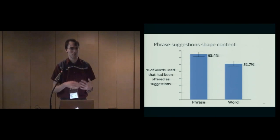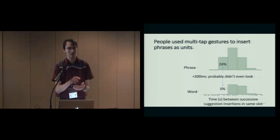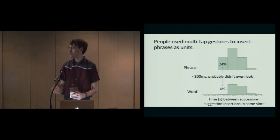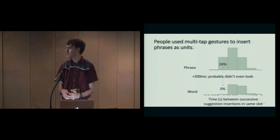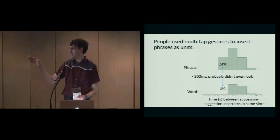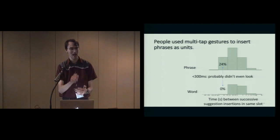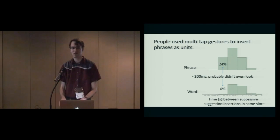Our other question was about timing and process. A critical measure that we looked at was the time between successive acceptances, which would tell us: are people accepting phrases as units, or are they going tap-look-tap-look? Here we plot a histogram of the time between successive acceptances in the same slot on log scale. We see there's an entire bin, that leftmost bin, which is 300 milliseconds or less, in which 24 percent of the successive taps in the phrase condition were less than 300 milliseconds apart, whereas zero in the word condition when they couldn't see the phrase that was coming up next.